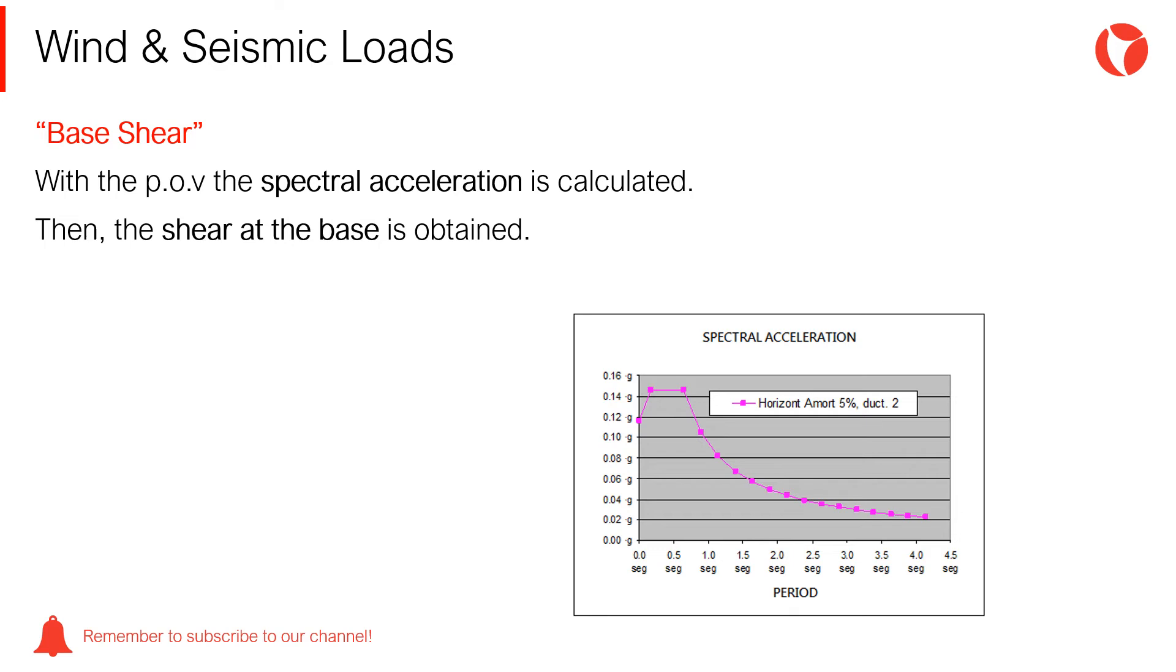Once the natural vibration period of the system has been calculated, it is necessary to use the spectral acceleration curve and obtain the shear at the base. This is the response that a pressure vessel will have in a seismic event in a specific location.